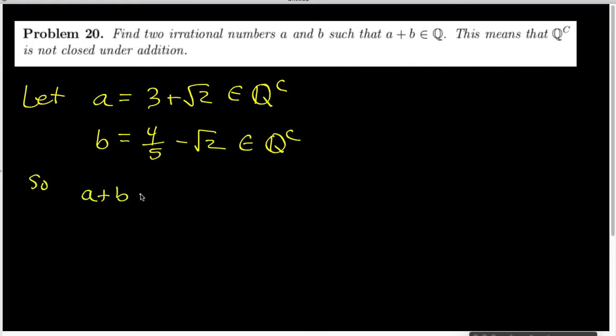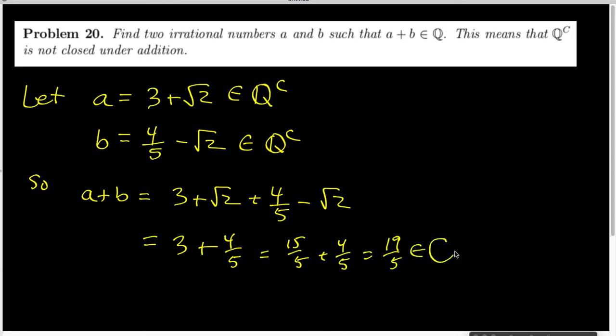So A plus B then is 3 plus square root of 2 plus 4 fifths minus the square root of 2. And a little bit of arithmetic says that that's 3 plus 4 fifths. And that is going to be 15 fifths plus 4 fifths. And that will be 19 fifths. And that is clearly a rational number.